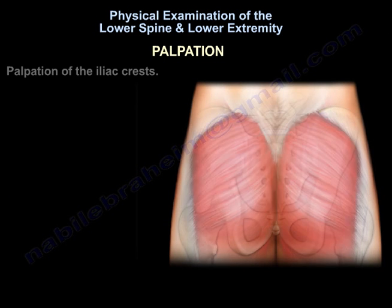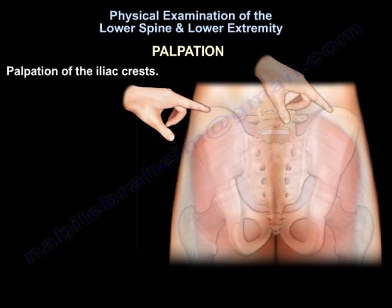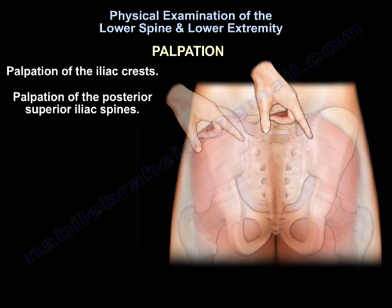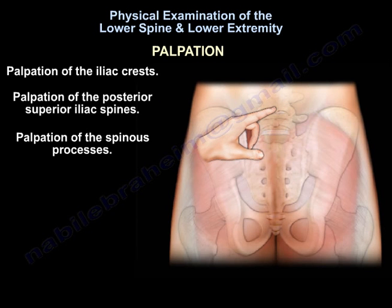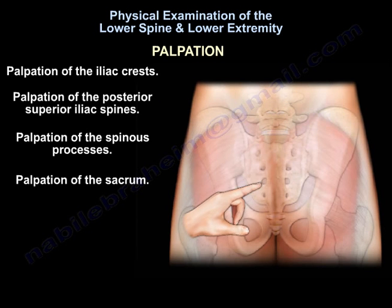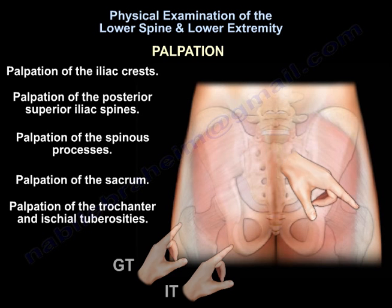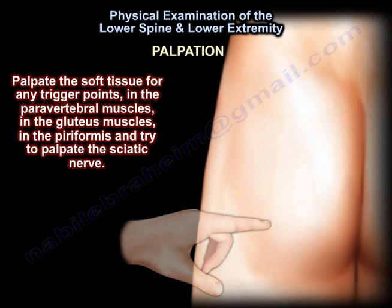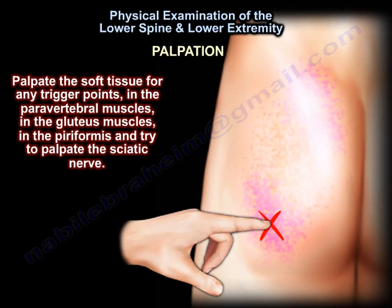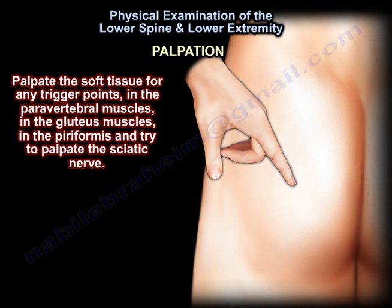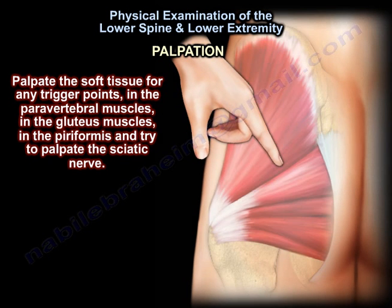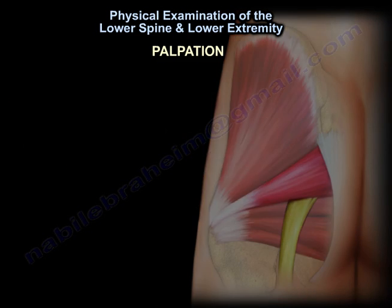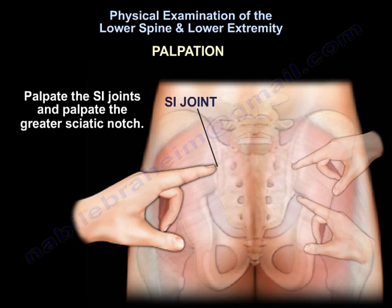Palpation. Palpation of the iliac crests, the posterior superior iliac spines, the spinous processes, the sacrum, and then the greater trochanter and the ischial tuberosities. Palpate the soft tissue for any trigger points in the paravertebral muscles, in the gluteal muscles, in the piriformis, and try to palpate the sciatic nerve. Palpate the sacroiliac joints and the sciatic notch.